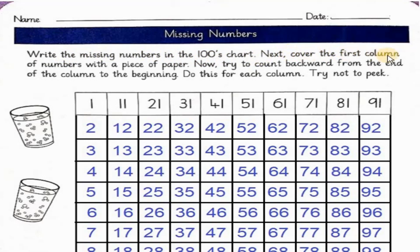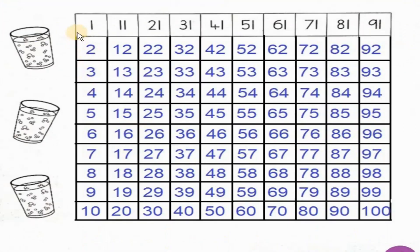Write the missing numbers in the hundreds chart. Next, cover the first column of numbers with a piece of paper. Now try to count backwards from the end of the column to the beginning. Do this for each column. Try not to peek. This is a chart from 1 to 100. You have to write the missing numbers.